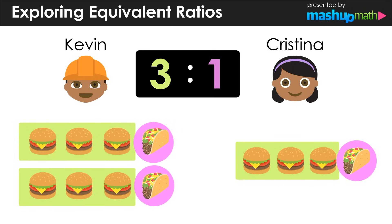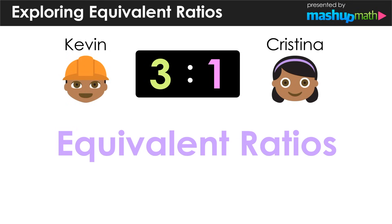Even though Kevin ordered twice the amount of food that Christina did, the ratios are still equivalent because for every three hamburgers there is one taco—in this case, a 3 to 1 ratio.